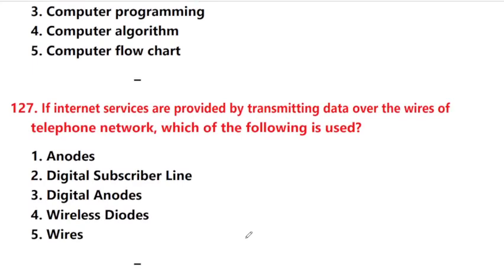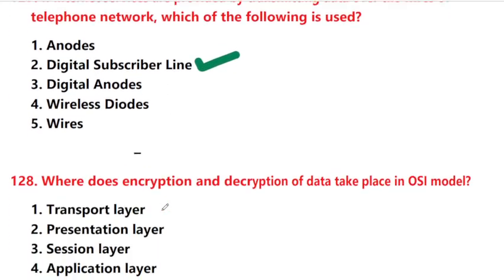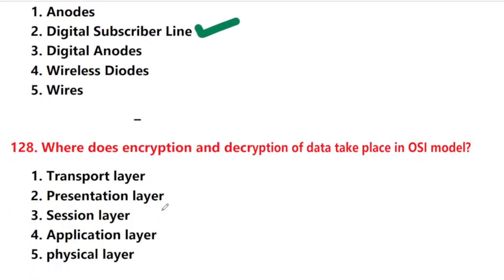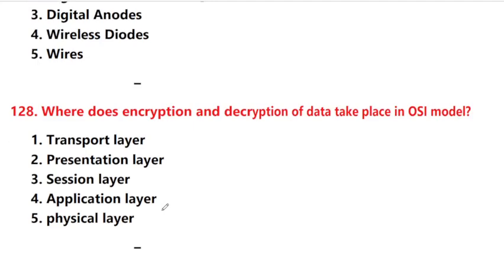If internet services are provided by transmitting data over the wires of a telephone network, which of the following is used? Answer is option 2: Digital Subscriber Line (DSL).